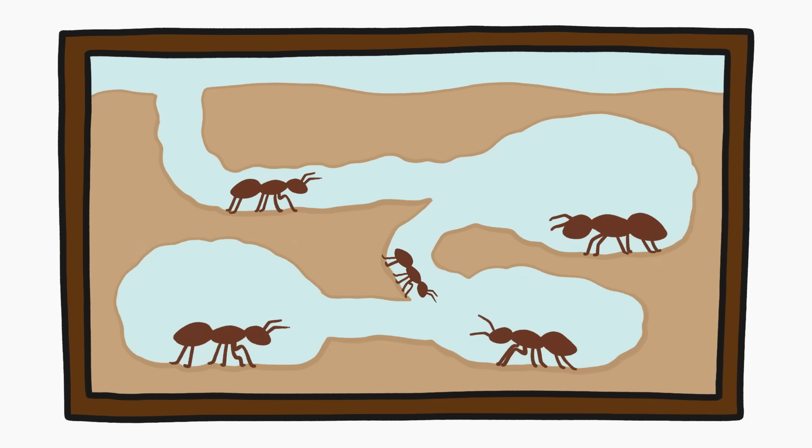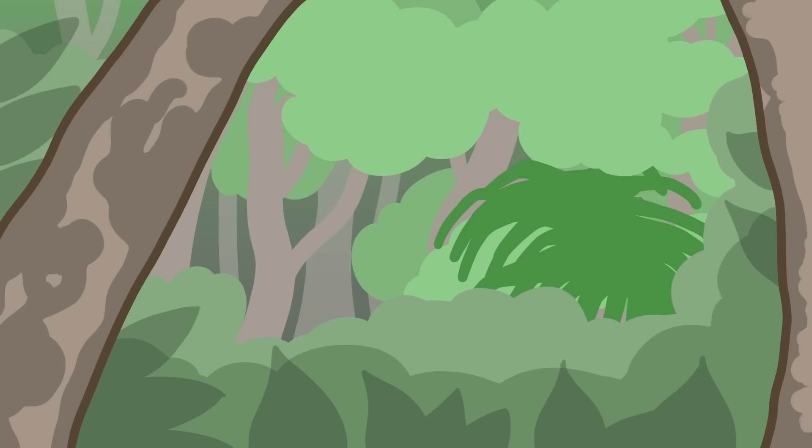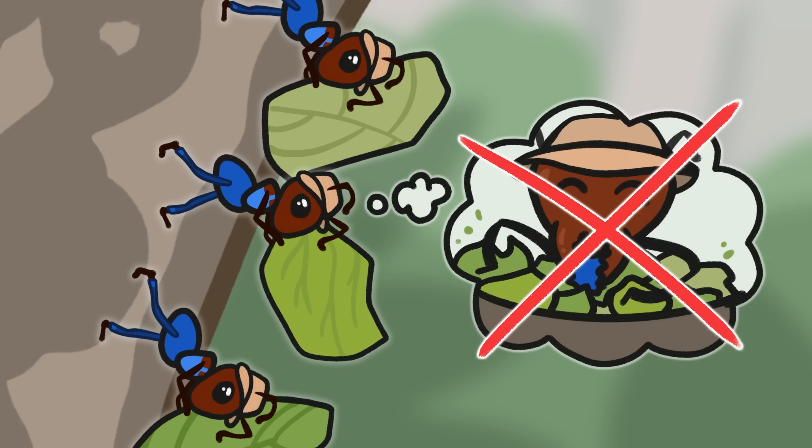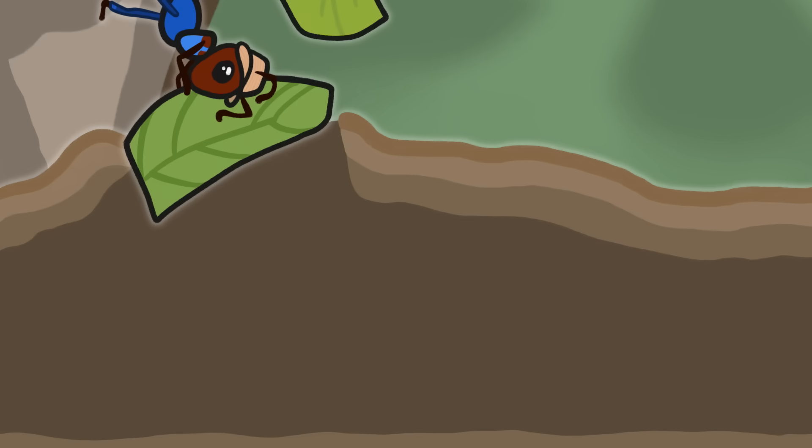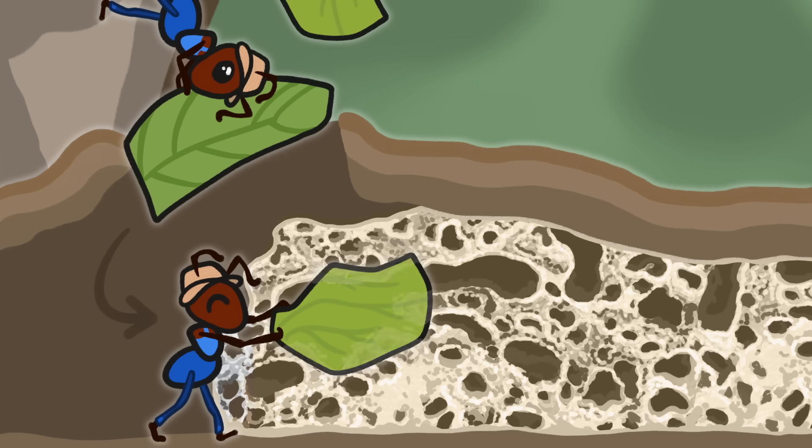You've heard of ant farms, but did you know that ants farm? It's true. In the forests of South America, columns of leaf-cutter ants scurry along tree branches collecting, well, leaves. But they don't actually eat the leaves. Instead, they do something much weirder. They carry the foliage underground to their home, where they feed it to a fungus.